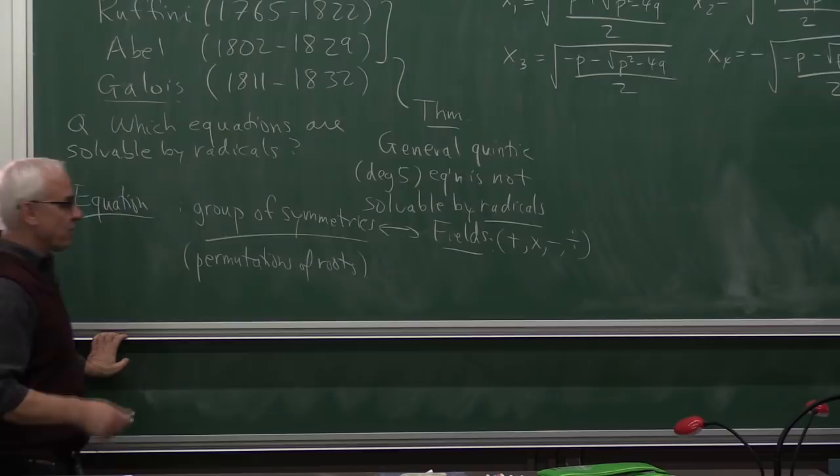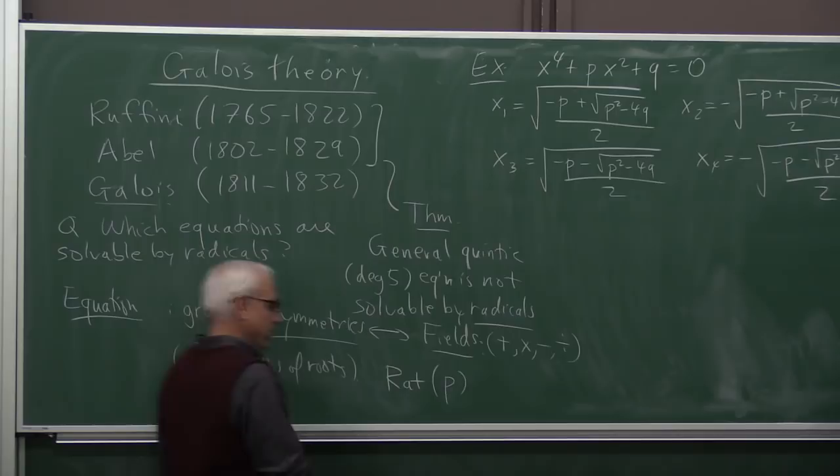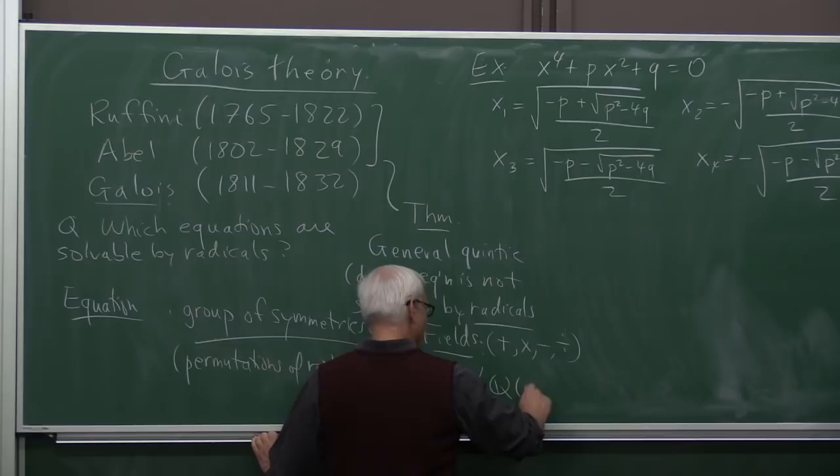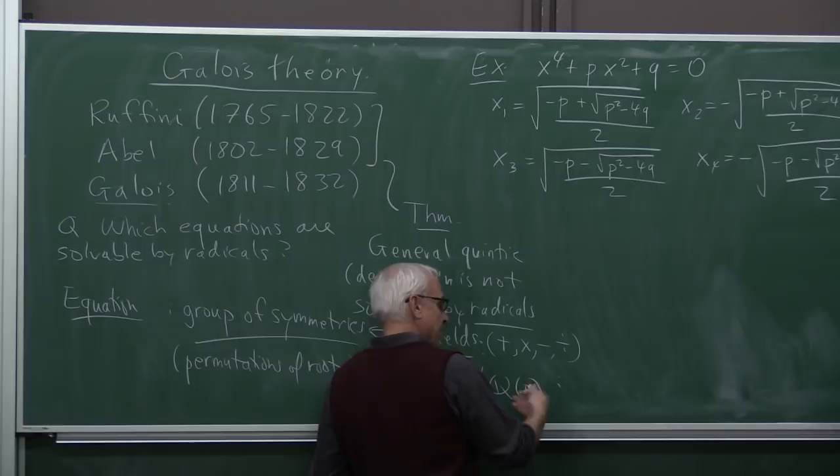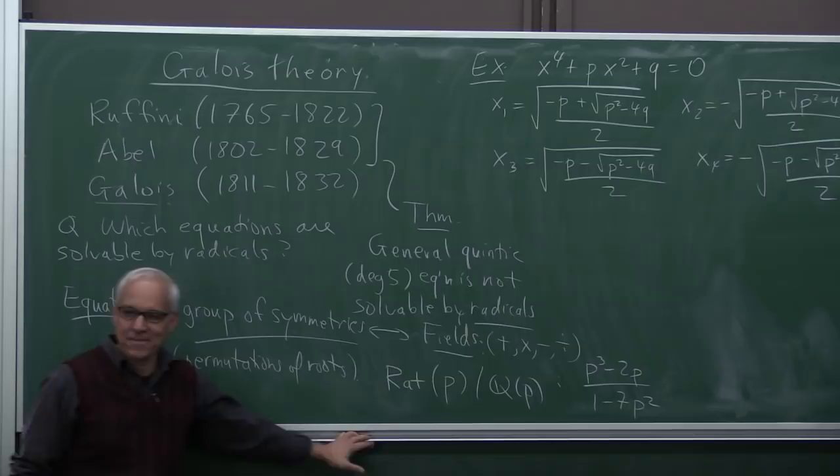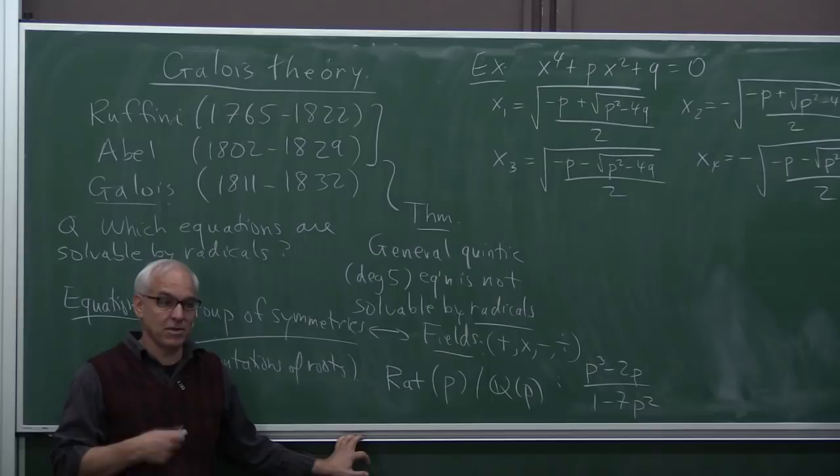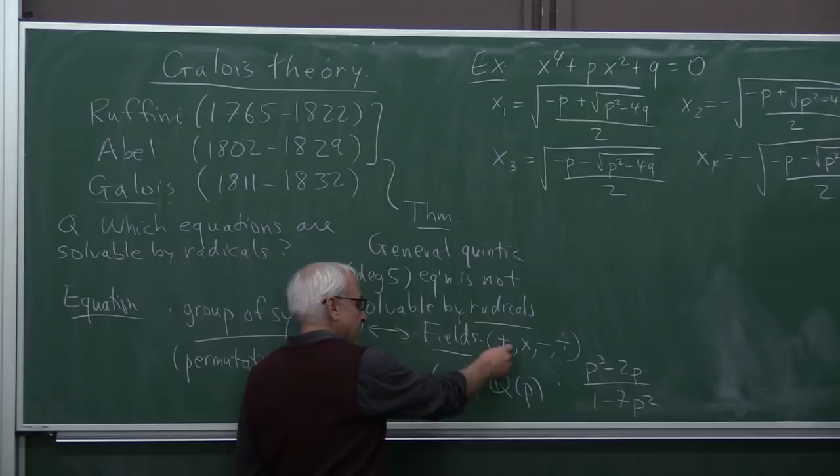For example, you might, say, have a field where you would adjoin, say, a variable. So I'm just trying to say, you know, the rational numbers by Q, or maybe Q of p. Then Q of p would be rational functions in a variable p. For example, maybe something like p cubed minus 2p over 1 minus 7p squared. So this is called a rational function in the variable p. And you can add such things and multiply them and subtract them and divide them. And they have the same kind of algebraic structure as does the field Q.